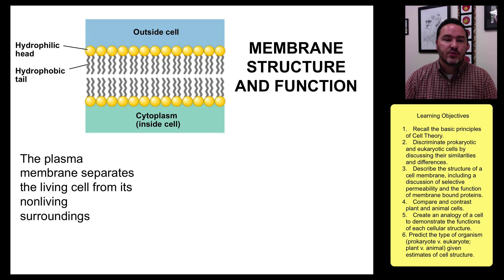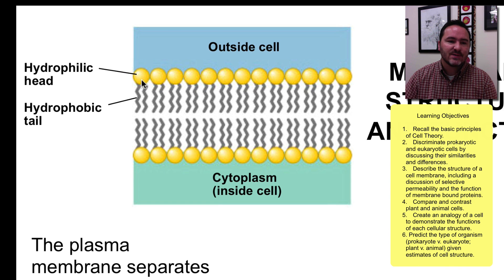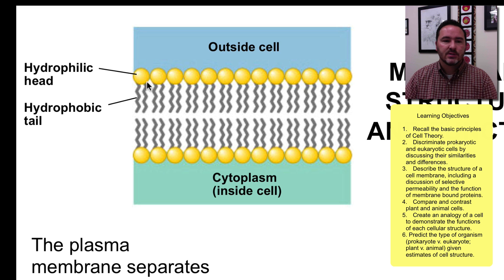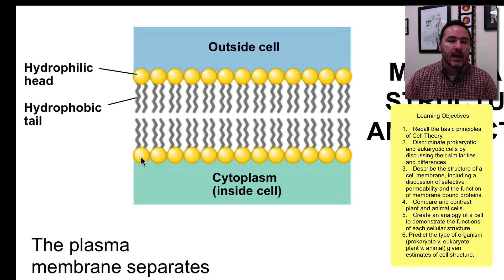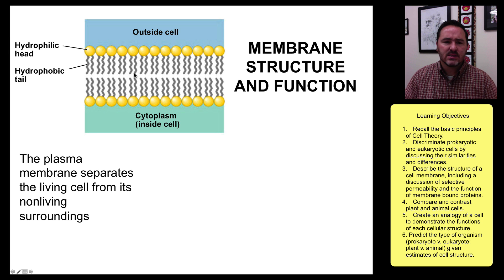Now we're going to look at the structure of a membrane. It's made up of a bilayer construction where you have these phospholipid molecules with a hydrophilic head and hydrophobic tails. They arrange so that the heads go towards the liquid — towards the outside of the cell and towards the inside of the cell, which is the cytoplasm, mostly water — and the tails face one another because they're hydrophobic and don't like water. This is how the cell membrane arranges itself.